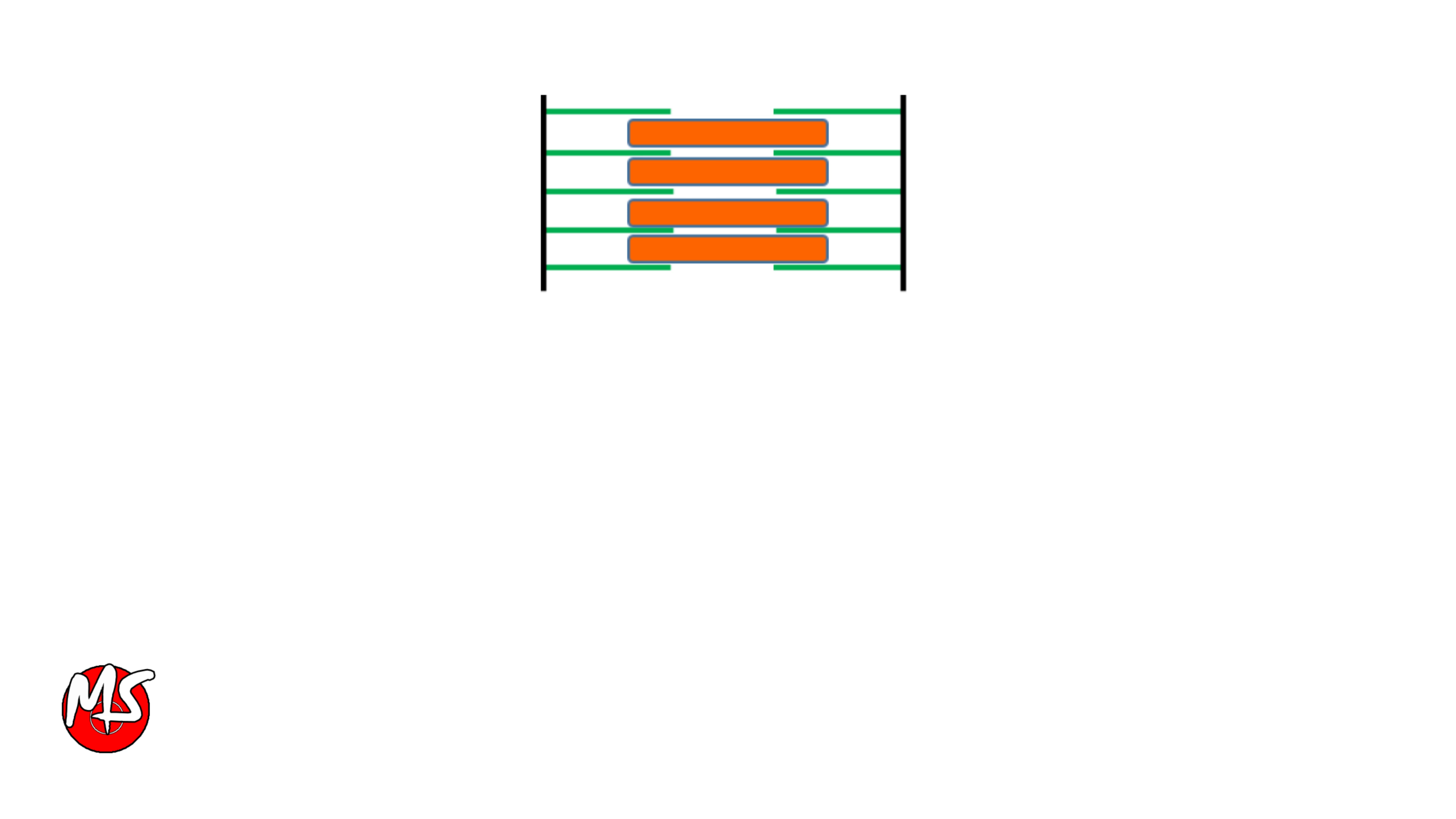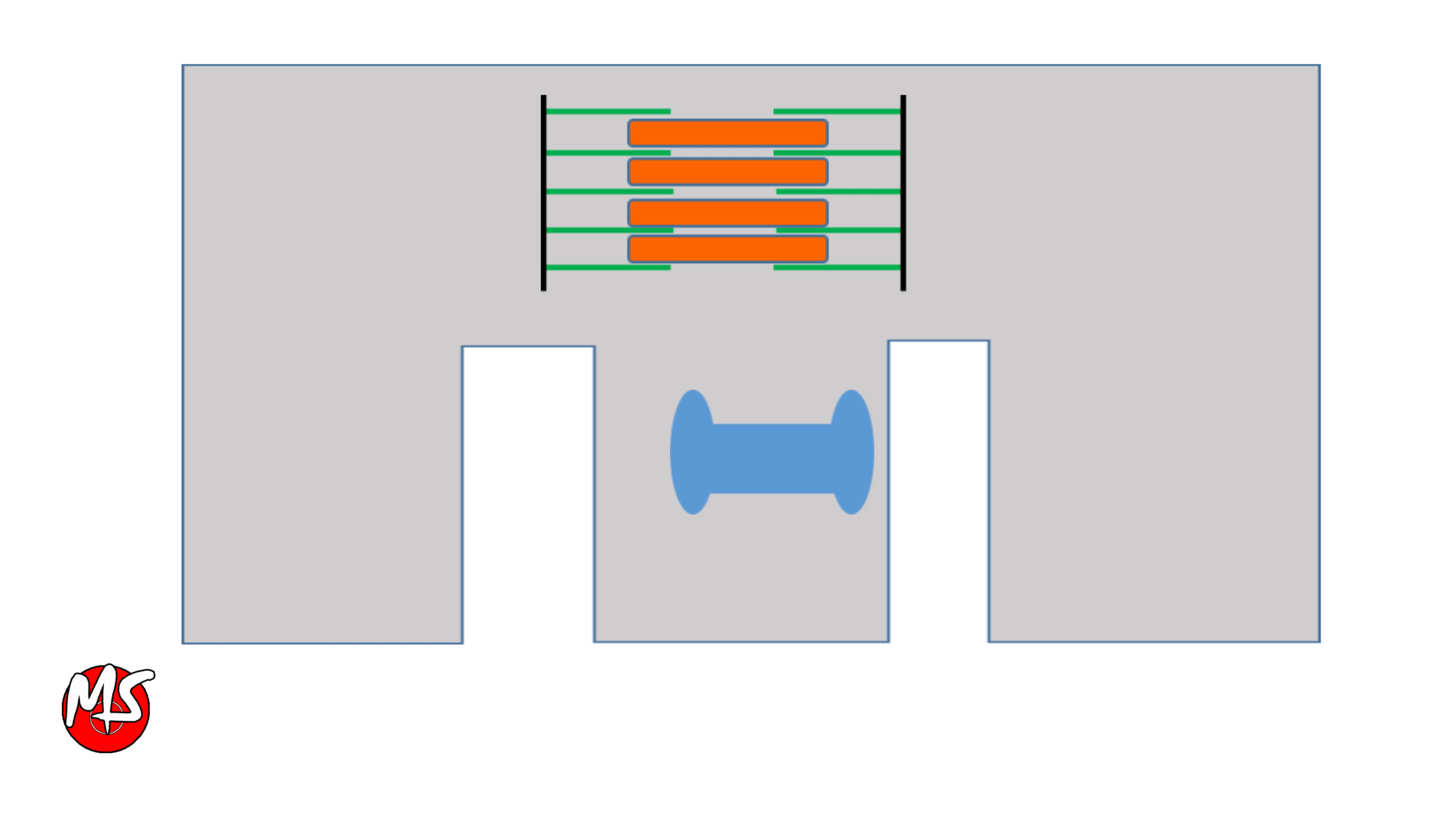Let's put this sarcomere inside sarcoplasm containing the longitudinal sarcoplasmic reticulum or the L-tubule. The T-tubule contains voltage-gated calcium channels associated with the dihydropyridine receptor. And L-tubules also contain voltage-gated calcium channels associated with the ryanodine receptor.